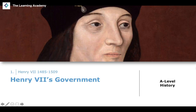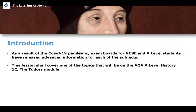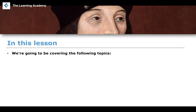In this lesson we're going to talk about the government, the council, and the parliament of Henry the Seventh. This lesson forms part of a series covering the AQA A-level history exam, specifically the 1C module on the Tudors, looking at the government of Henry the Seventh.